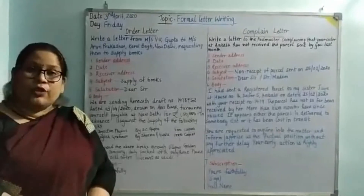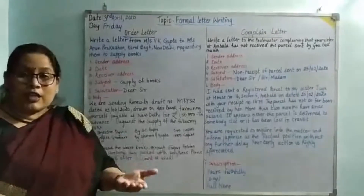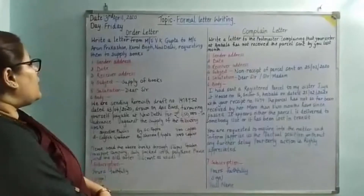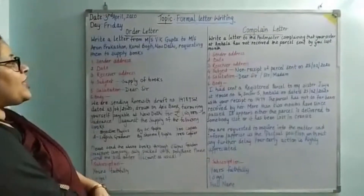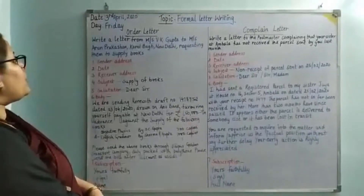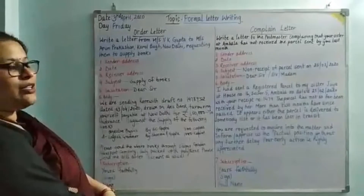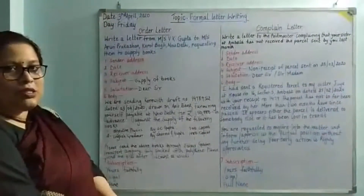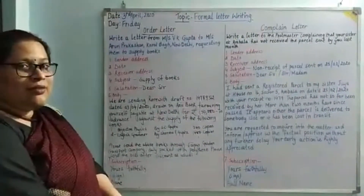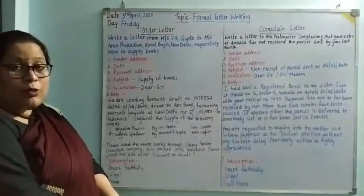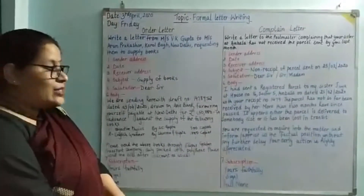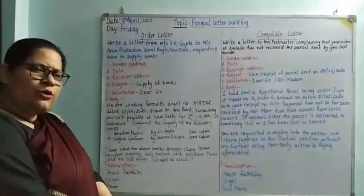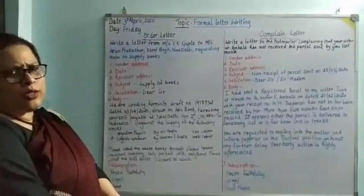In an order letter, you will be ordering something to someone. Let's take a sample: write a letter from Mr. V.K. Gupta to Mr. Arun Prakash in Karol Bagh, New Delhi, requesting them to supply books. The list is not given — in certain questions the list will be given so you can use that, but since it has not been mentioned here, you can use as many books as you want.